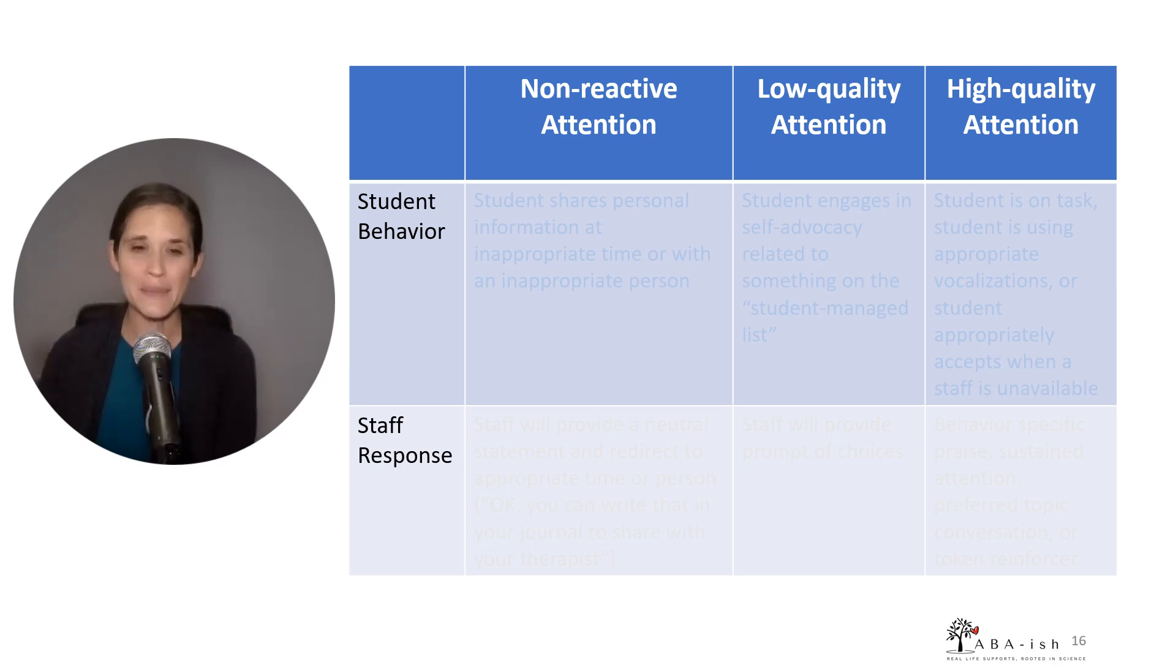Okay, so let's look at what a continuum would look like to help you understand a little bit more. In this example, I have an individual whose behavior is maintained by access to attention. So I'm going to create my continuum to have three types of attention. The first is non-reactive attention, followed by low-quality attention, and then high-quality attention. And I'm going to make sure that in my continuum, I'm very clear about what the student behavior is and how staff should respond.